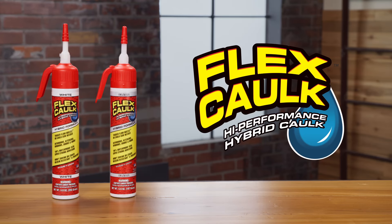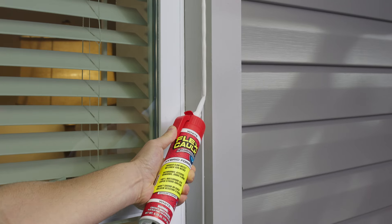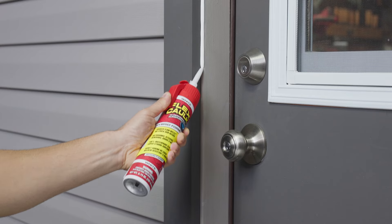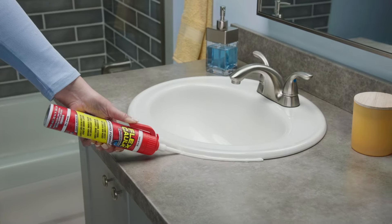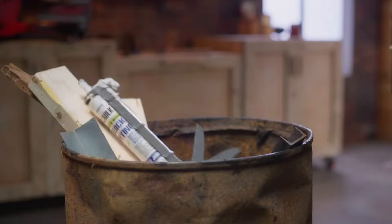This is Flexcaulk, and it's so easy to use. Flexcaulk is a new high-performance hybrid polymer caulk in a pressurized can. So now, you don't need a caulking gun.